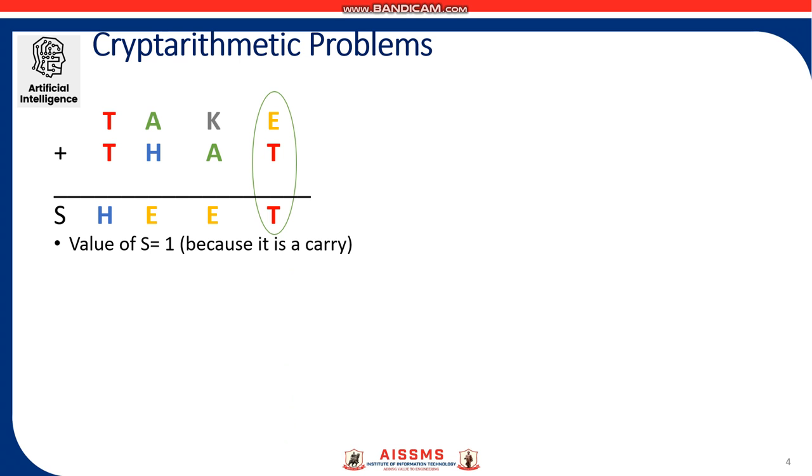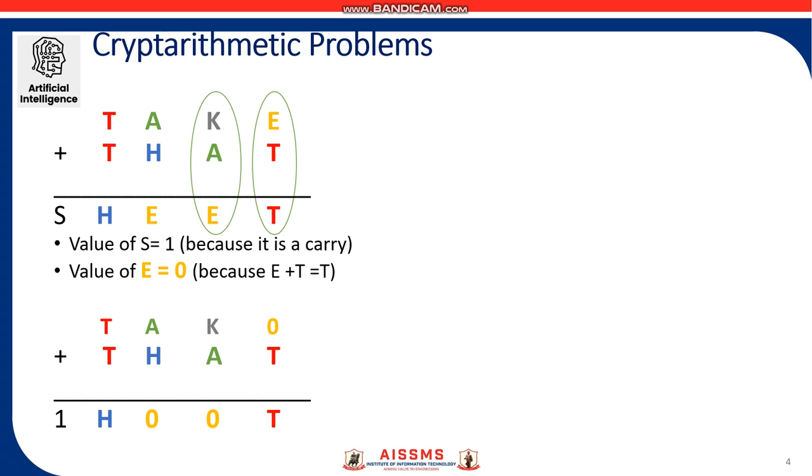Now as we move on to the rightmost column, we see that E plus T is T. So here E must be 0 and replacing it in the problem. So our problem looks like this. Moving on to the second column, K plus A must be 10 without a carry.